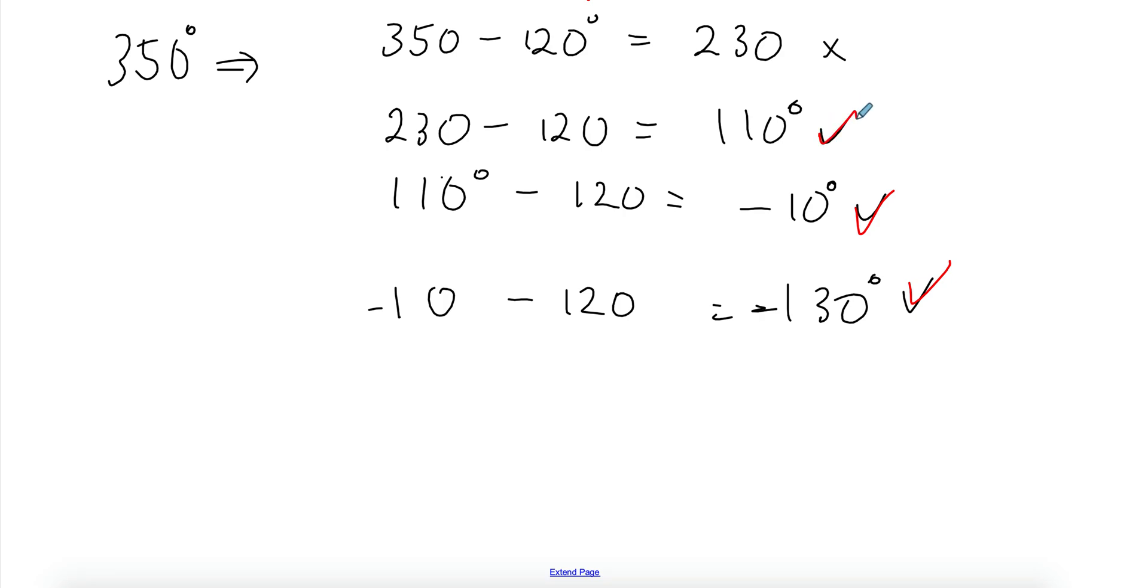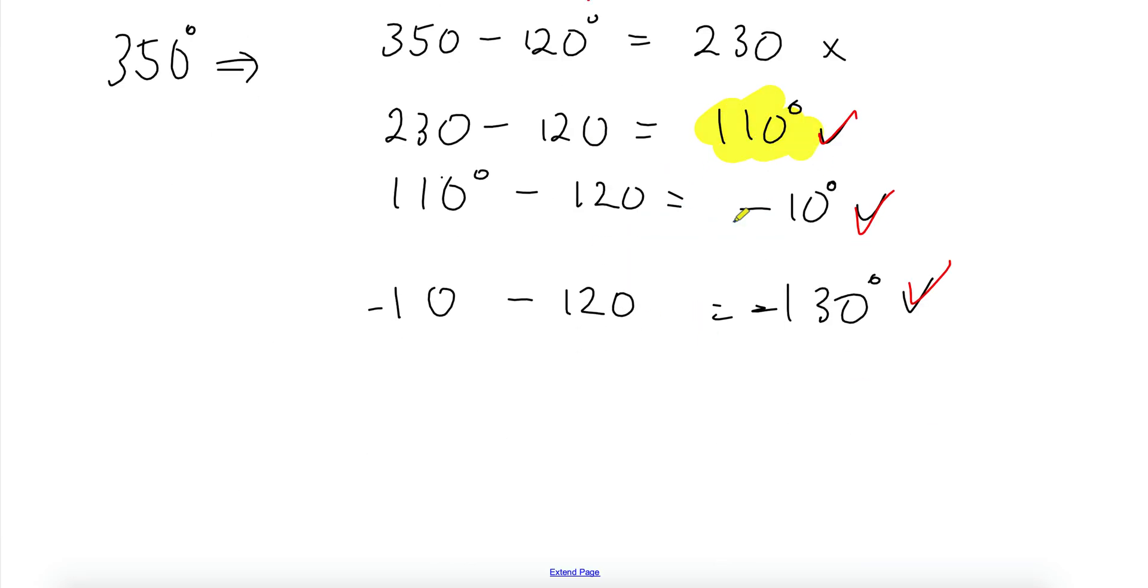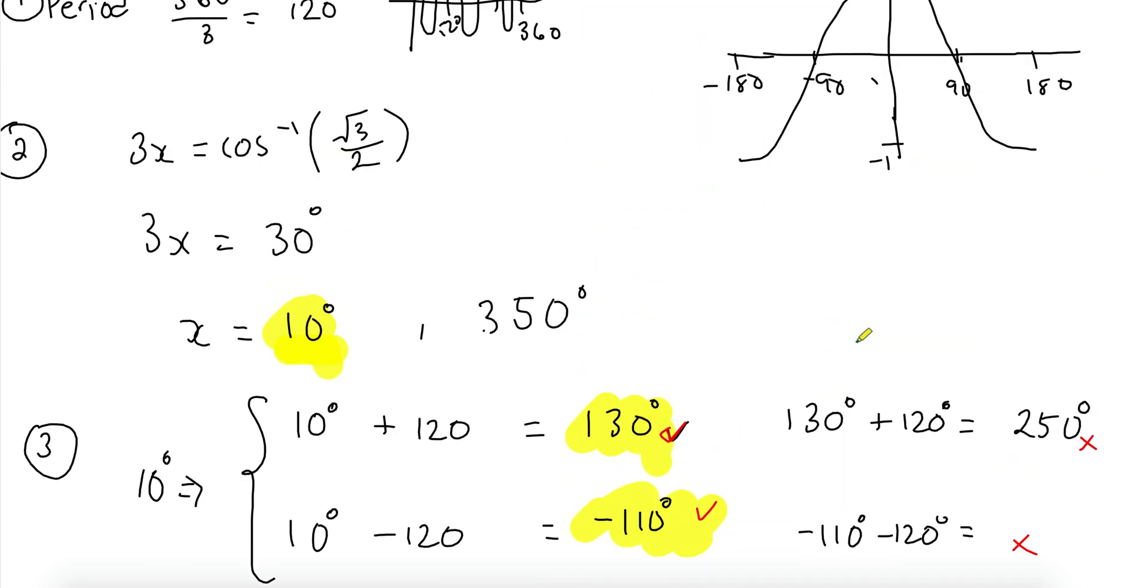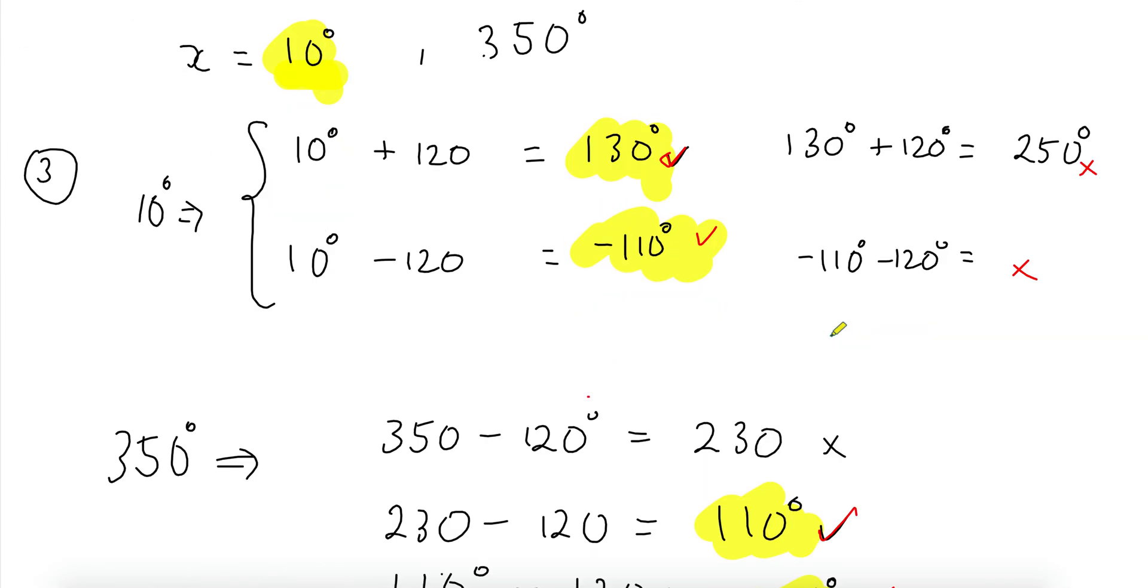So we have one, two, three, four, five, and six solutions. Let me just highlight them with a different color. So our solutions are this 10, 130, negative 110, 110, negative 10, and negative 130. And they are within the domain if you check. And if you've gone any further or lower, then you wouldn't have reached the domain. Just make sure you do it in a nice organized way.